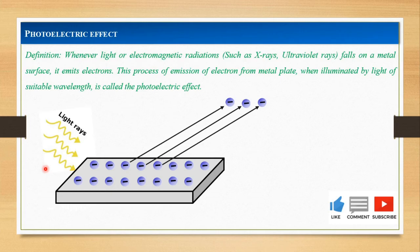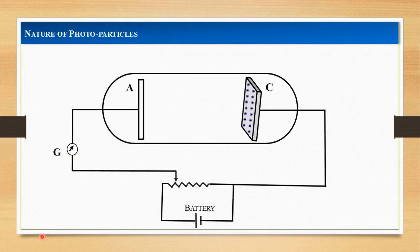In order to study the nature of these photo particles or photoelectrons, consider the experimental arrangement as shown. It consists of an evacuated quartz bulb having the photosensitive plate C and another metal plate A. When monochromatic light is incident on the cathode C, the electrons are emitted by plate C and are collected by plate A. So plate A is called the collector and plate C is called the emitter.